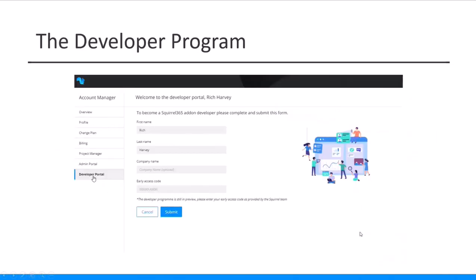The developer program. In order to get started, in your Squirrel account you go to your account manager, and on the bottom left you'll see a developer portal. To get started, you just put in your first and last name — company name is optional. At the moment there's an early access code; towards the end of the month that's going to be removed. But for now you need to put in the early access code to get into the program. The early access code will be displayed at the end, so if you stay through to the end you'll get that. And if you need to drop off, the video will be sent to you later with the code included.